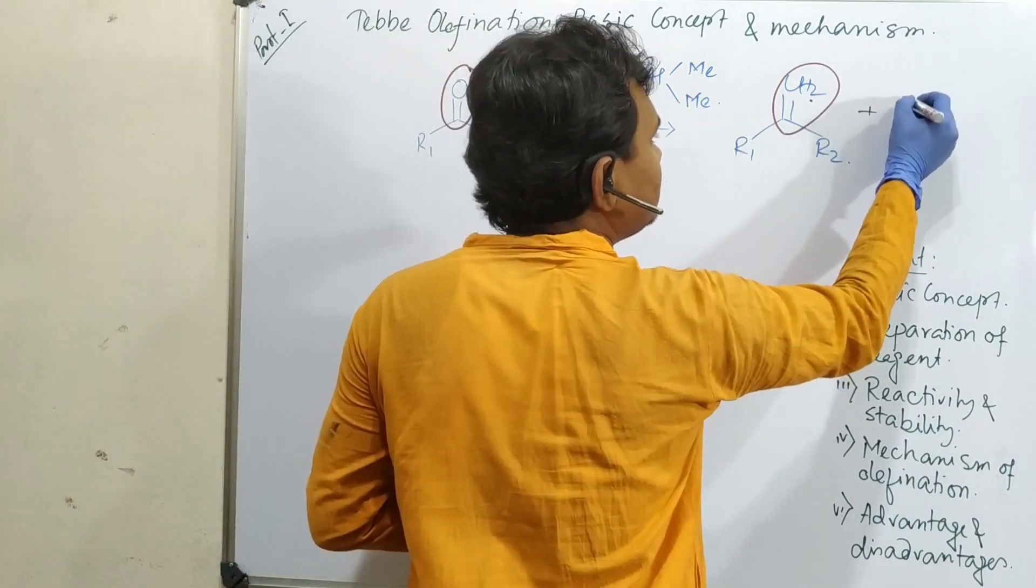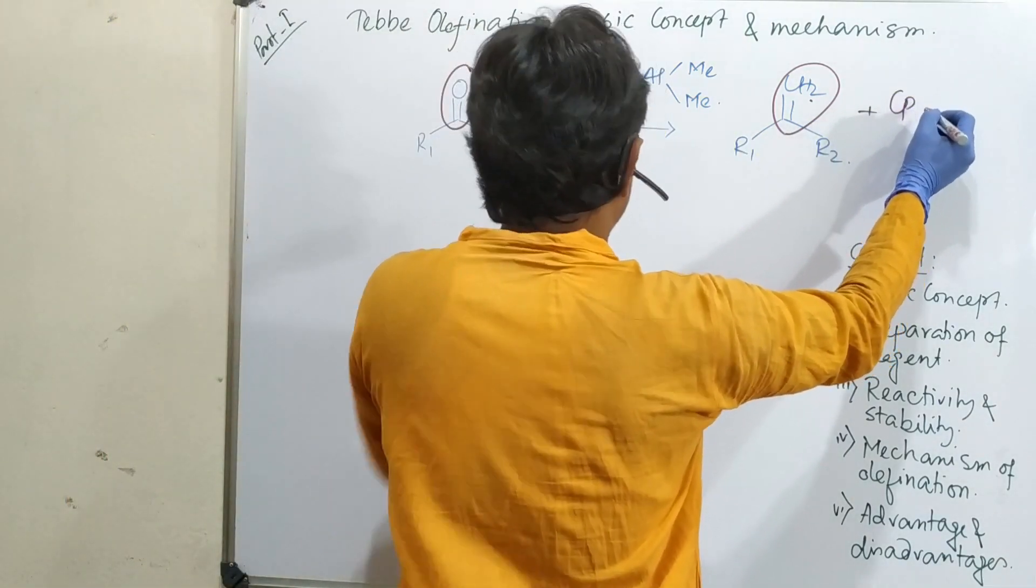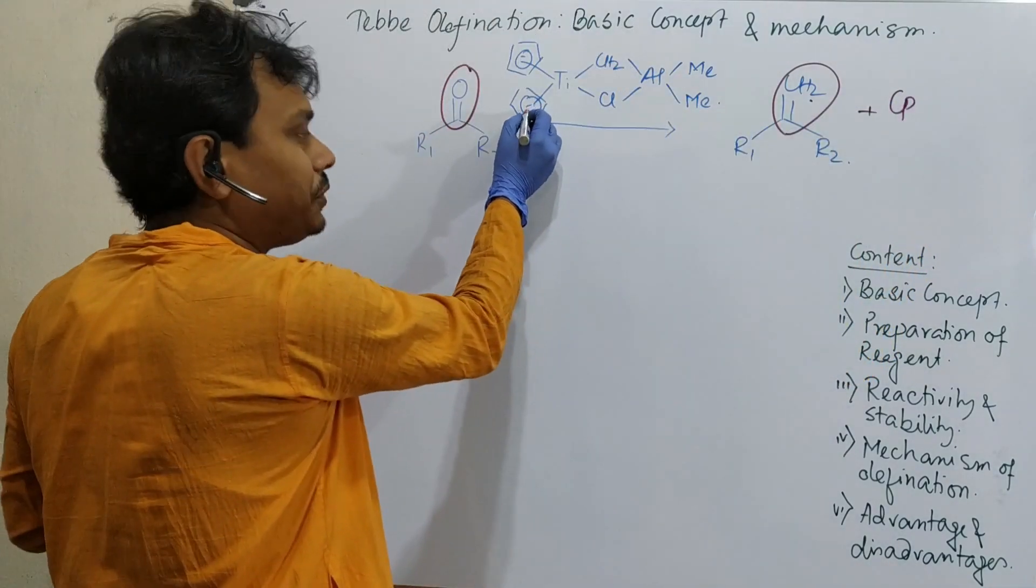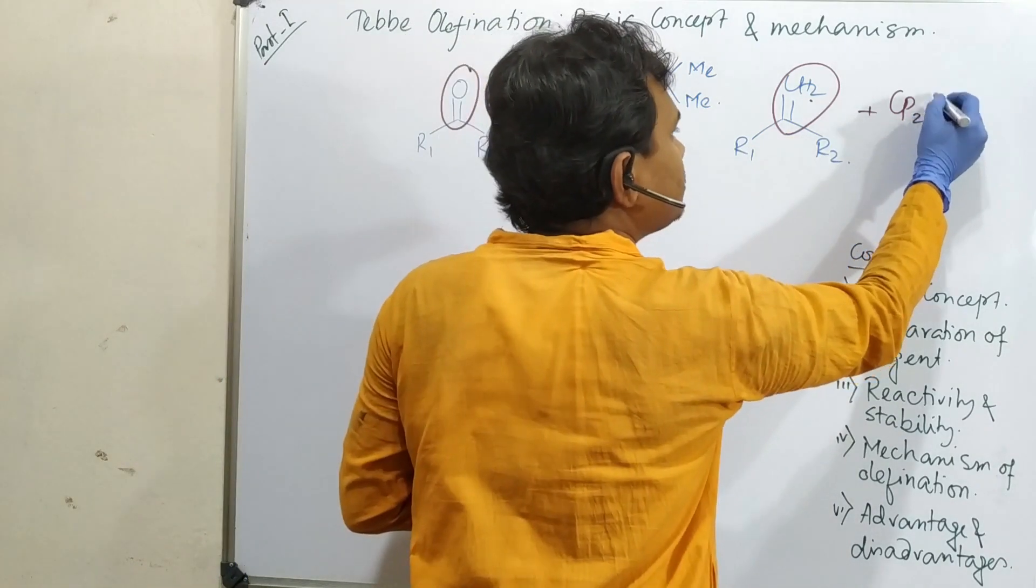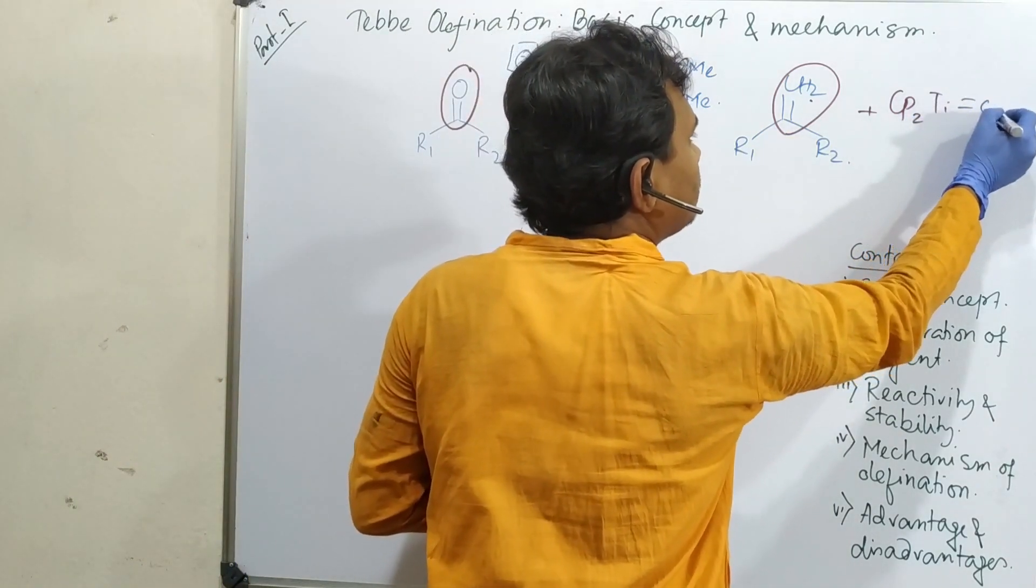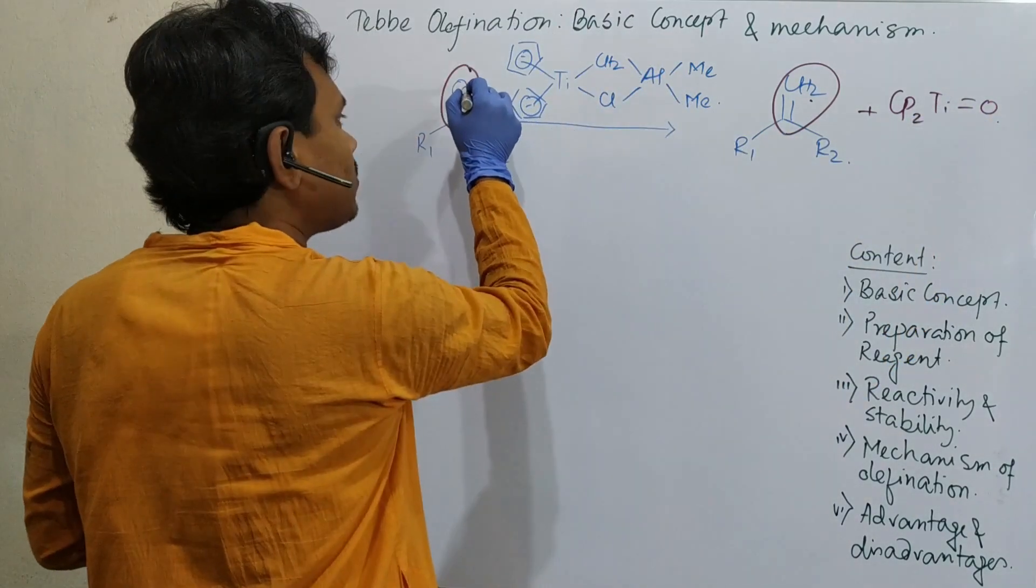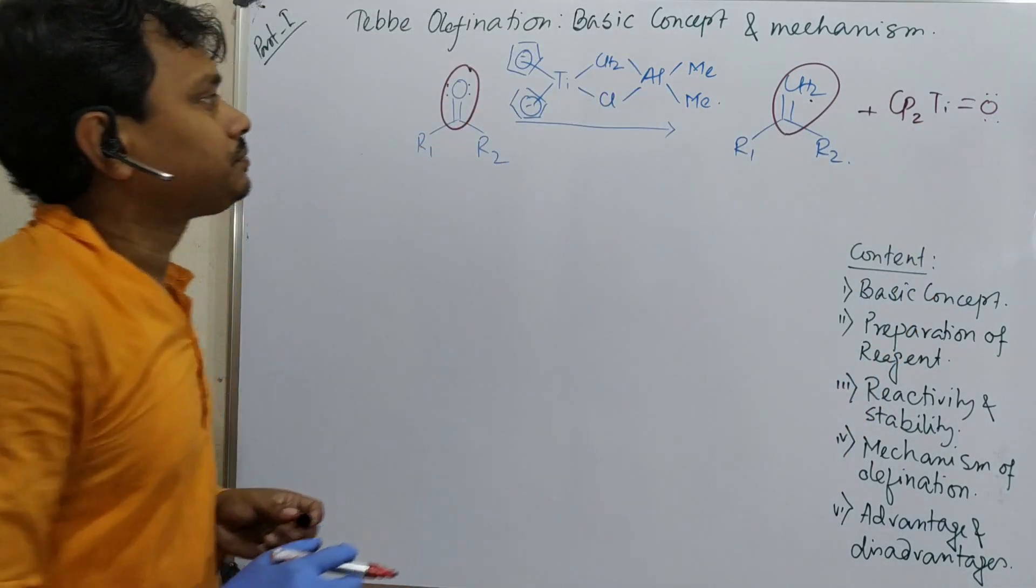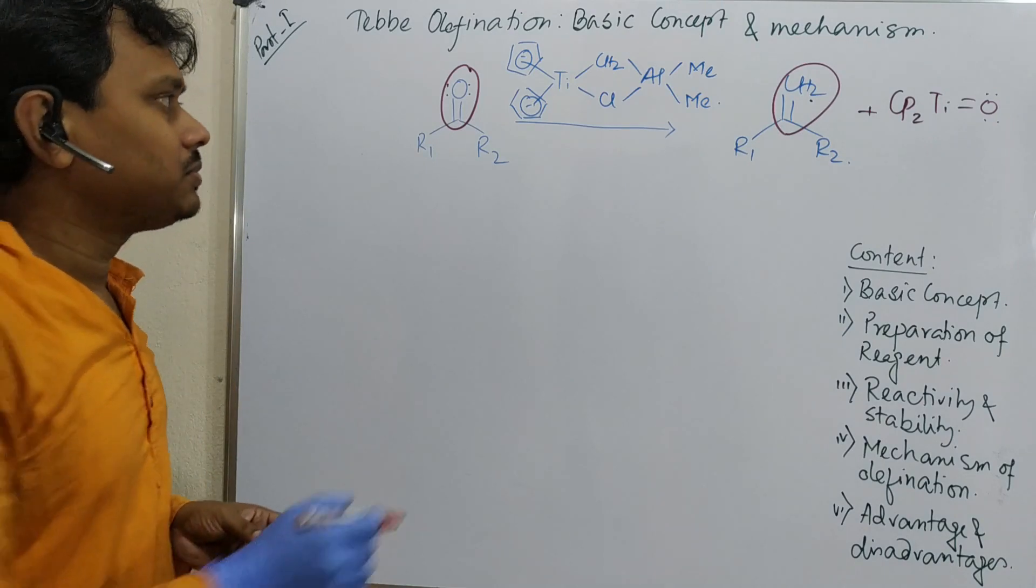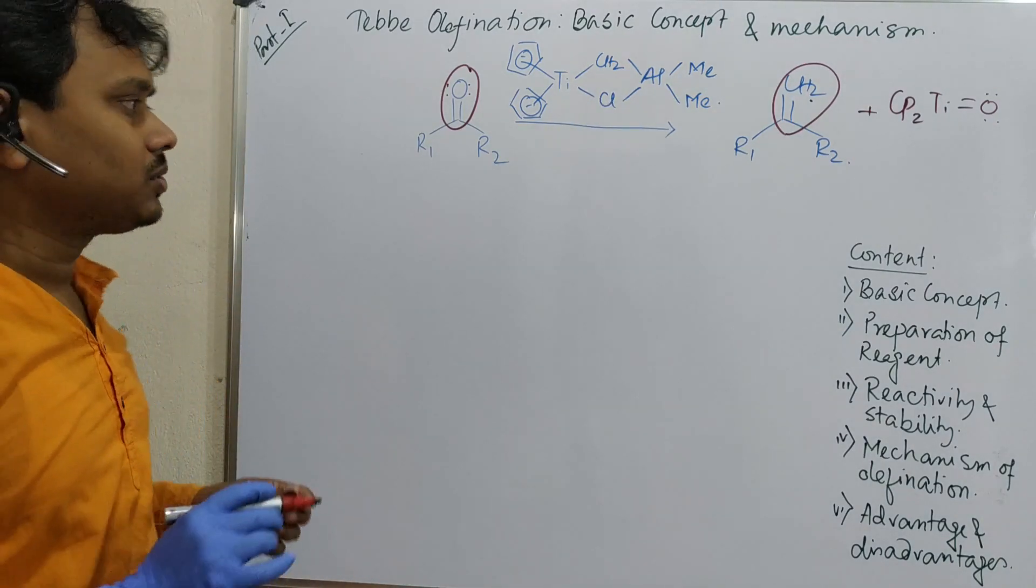This reaction is the conversion of carbonyl to methylene. And what happens, this titanium center, this Cp means cyclopentadienyl anion, keep it in mind, not cyclopentadienyl, this is anion. Cp2Ti double bond CH2. The fate of this oxygen is this formation. And why this happens, because this titanium center is stable. So let's start.